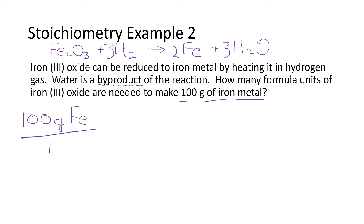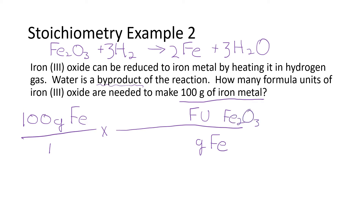We're going to multiply — we need the units to cancel out, so we put grams of iron on the bottom, and the unit and chemical we are trying to find go on top. It's asking how many formula units of iron three oxide are needed, so our unit is formula units and our chemical is Fe2O3. Since we have two different chemicals, it requires two different numbers in the top and bottom. Formula units are a type of representative particle, so this will be 6.02 times 10 to the 23rd formula units. The coefficient from the balanced equation for iron three oxide is one; for grams the molar mass of iron is 55.8.